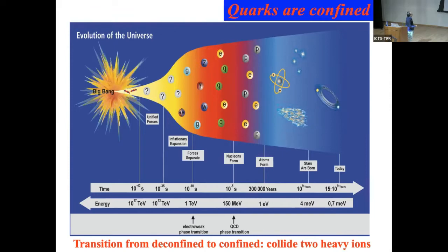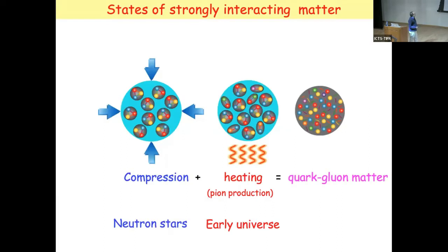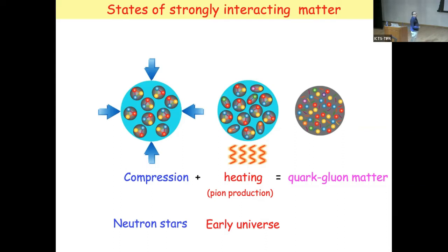Below this microsecond, or at the microsecond-old universe, matter must have been in a deconfined phase which we need to study in the laboratory. Conceptually there are two extreme ways to reach there. One is by heating — you pump in a lot of energy and get a soup of quarks and gluons, similar to the early universe. The other is compression — you compress such that inside one proton's volume you have three or four protons, reaching conditions similar to the core of a neutron star.